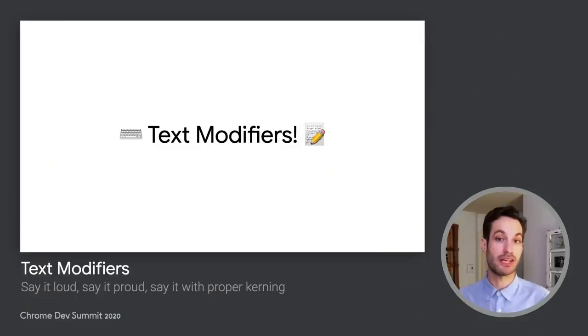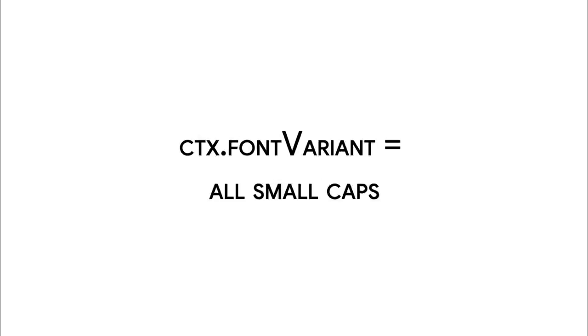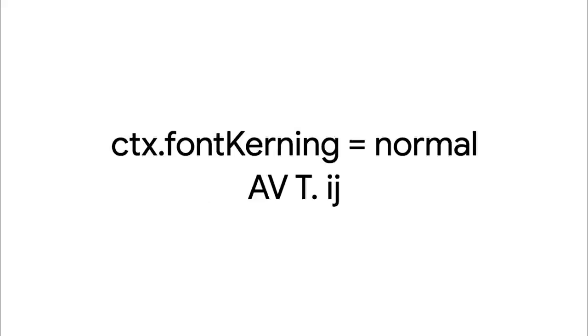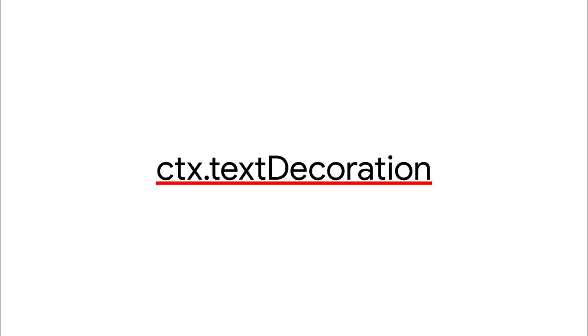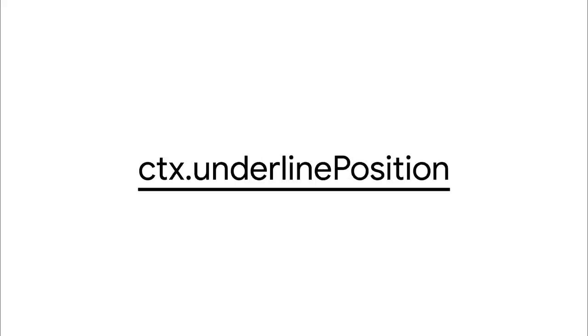The most common feature request we get by far is to improve text rendering in Canvas, and we're working on it. With the new API, we've added a bunch of new attributes to Canvas text: text letter spacing, text word spacing, font variants for all the typographical geeks out there, kerning — who doesn't love kerning — font stretch, text decoration, underline position, and finally text rendering. That's a whole lot of textually explicit content.